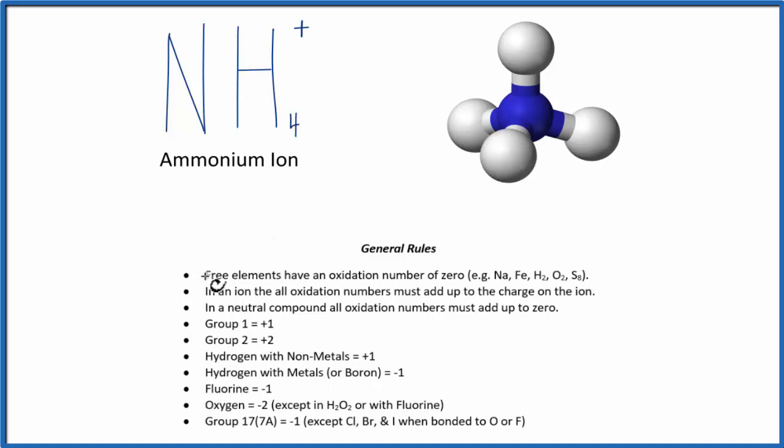Let's look for hydrogen. As we come down here, it says hydrogen when bonded to a nonmetal is always plus one. Nitrogen is a nonmetal, so each one of these hydrogens will have an oxidation number of +1.